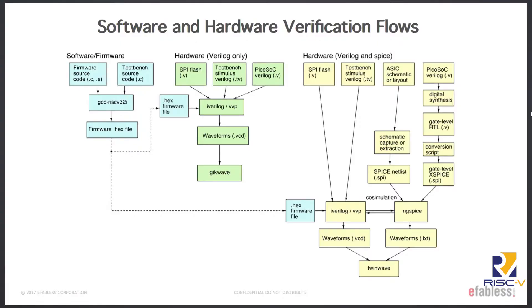There are three flows here. The first one is a software flow, which Clifford very helpfully put into his distribution, such that it is really a matter of typing make, and it downloads the GCC flow, compiles it, runs it, and generates a hex file for you to plug into your model of your flash. The middle flow is what you're probably more used to as digital designers — you just take everything, whether it's the SPI flash, your stimulus test bench, and your SoC core, and throw it all together and simulate it in Verilog.